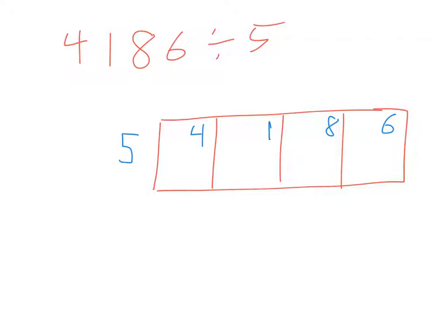How many times does 5 go into 4? Zero. Zero times 5 is 0. Four minus 0 gives me 4. So instead of bringing the number down like you normally see, we're going to bring it up. Start the whole process over.